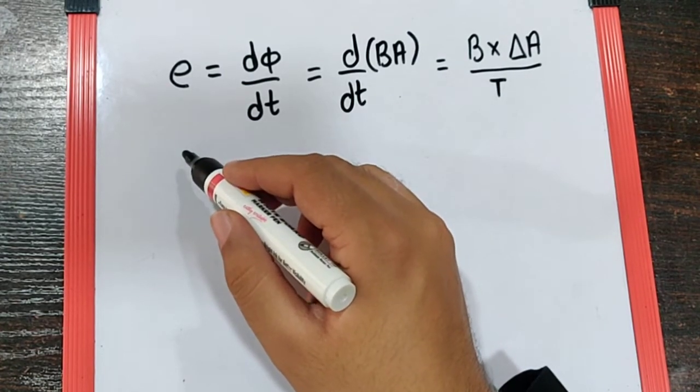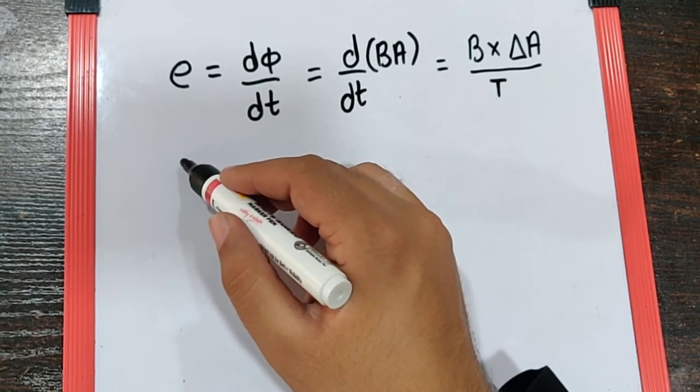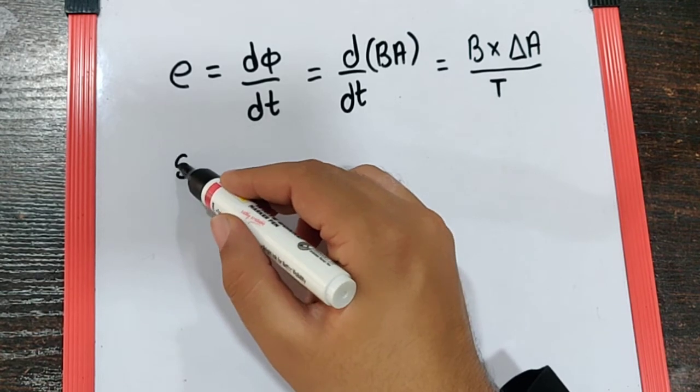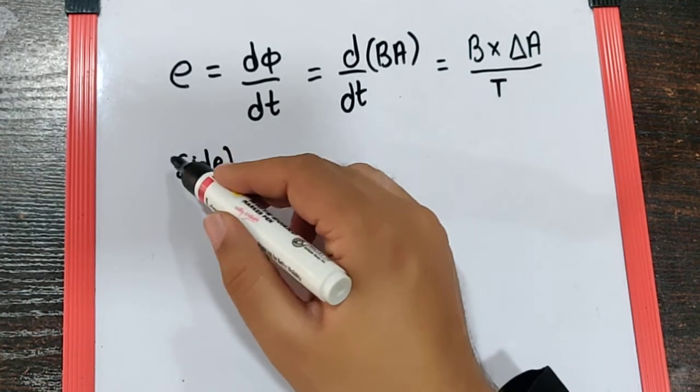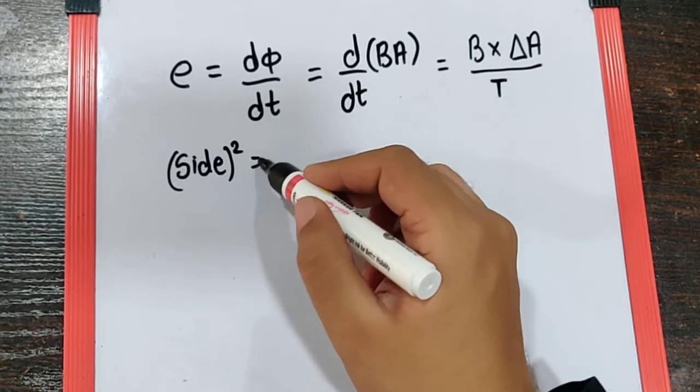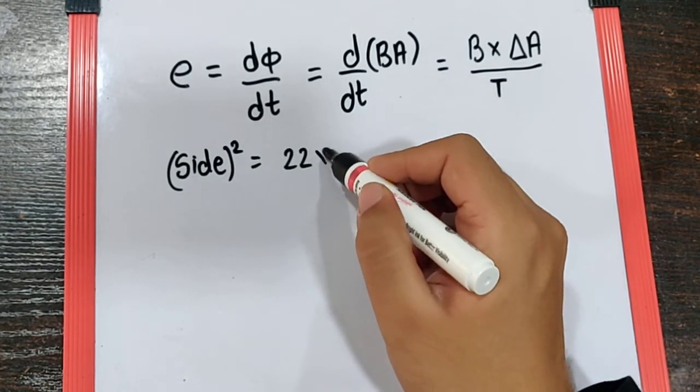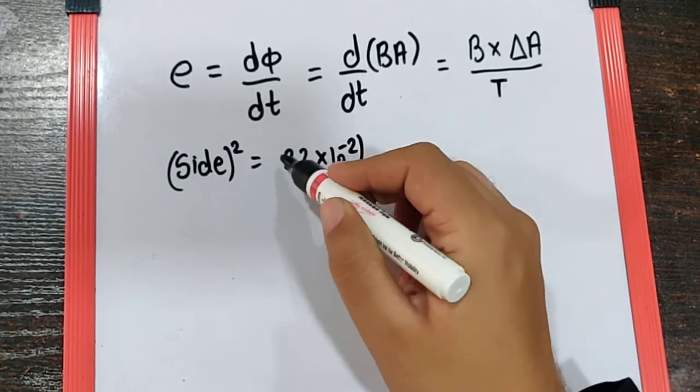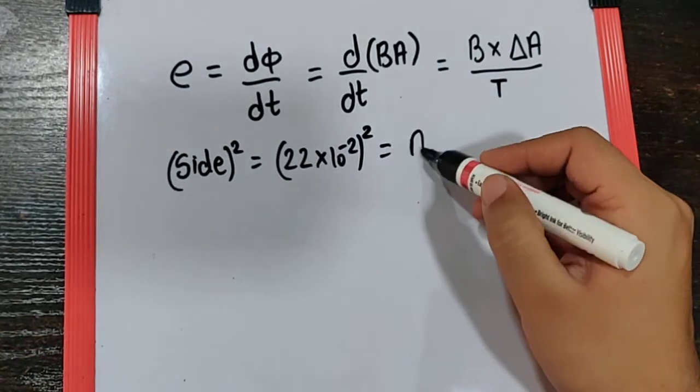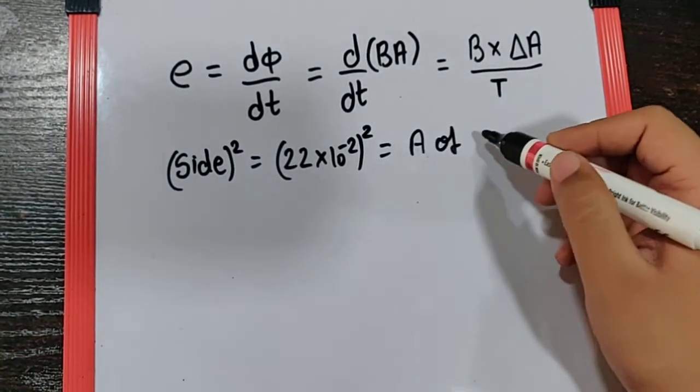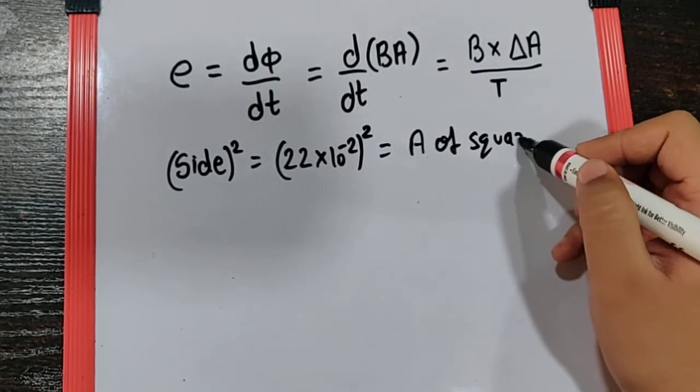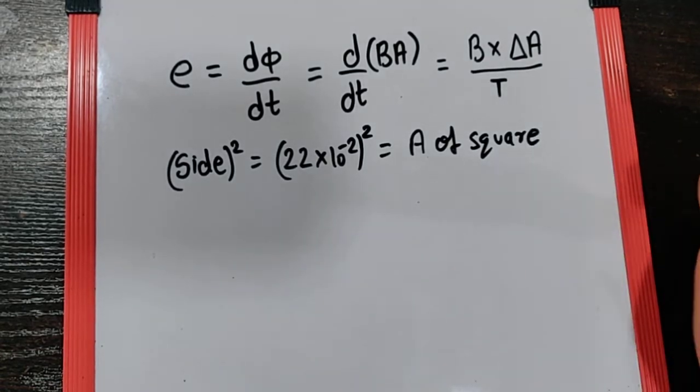For which they have said the square was of the side 22 centimeter, which means the side squared which is 22 into 10 raise to minus 2, the whole square is the area of square which is kind of initial area.